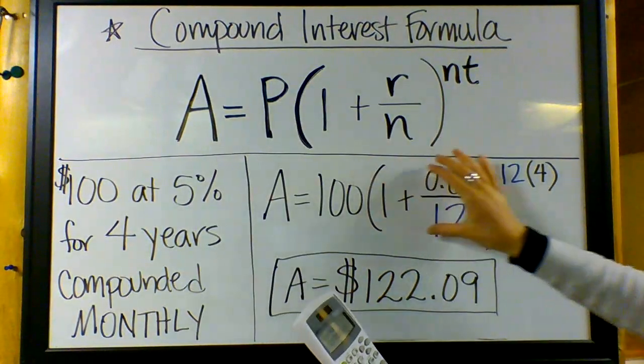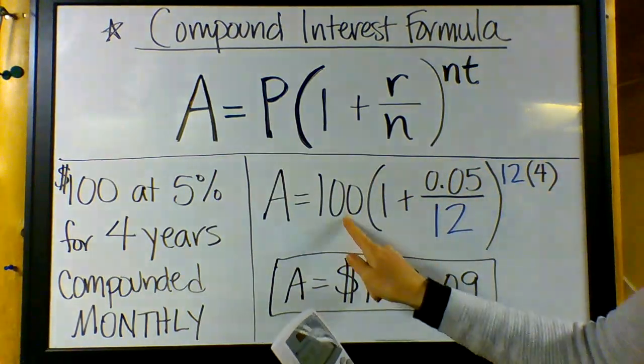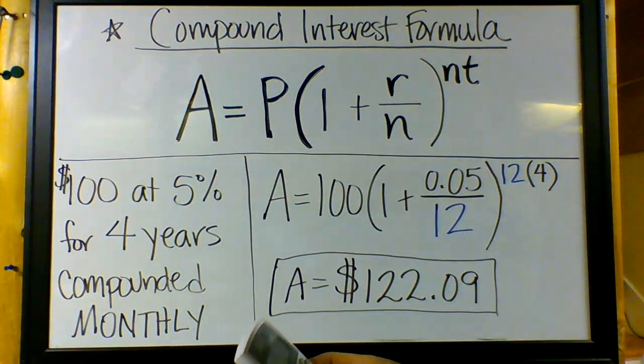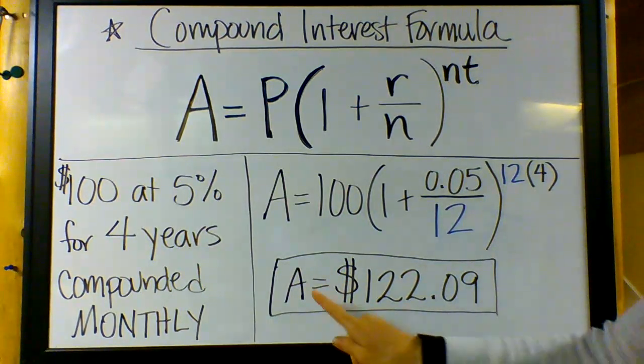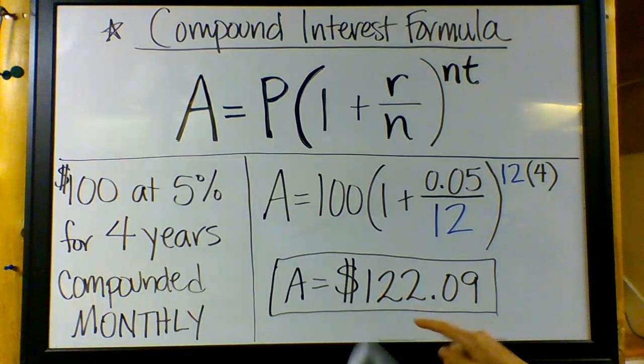Then we need... so we did the parentheses, we did the exponents, now we're going to do multiplication. So times 100, and I get $122.89, so I said $122.09.